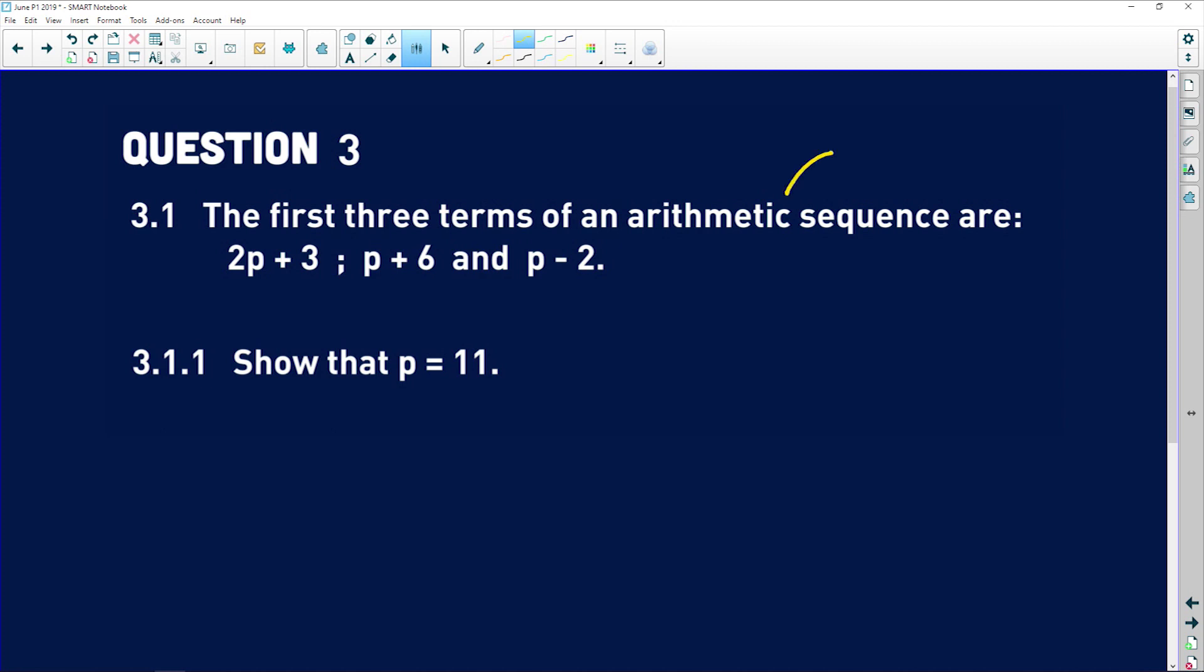Now remember, arithmetic sequence means common first difference. So if I subtract t2 from t3, I'm going to get the same answer as t2 minus t1. 3.1.1 says show that p is equal to 11.